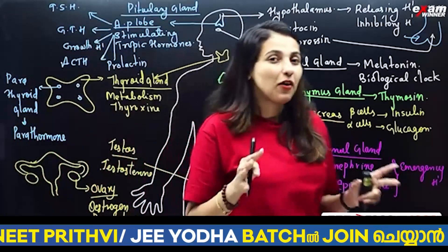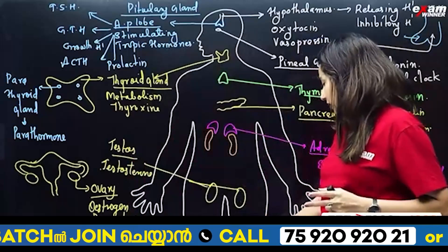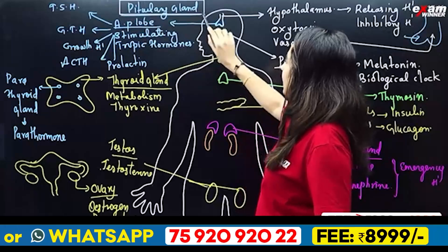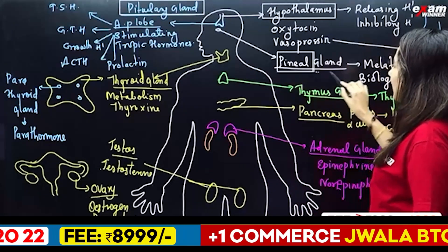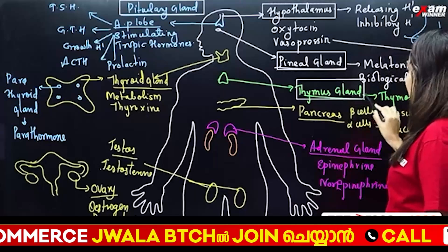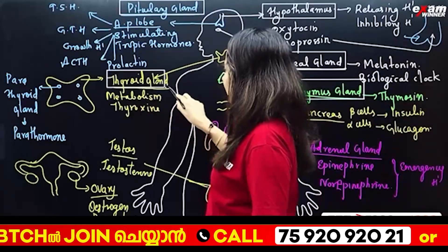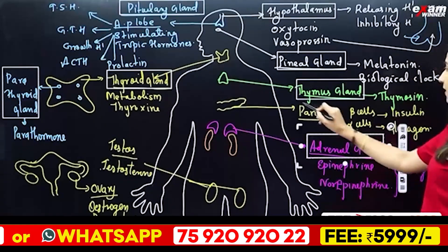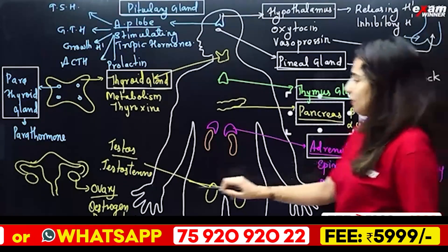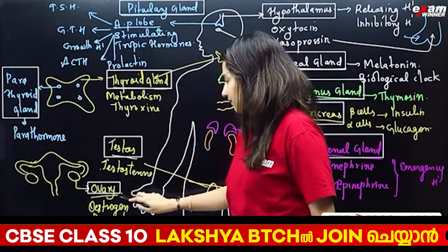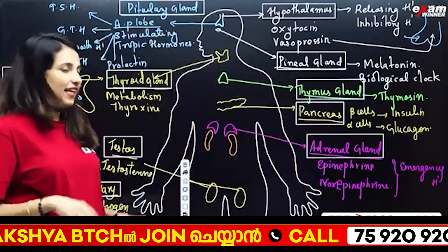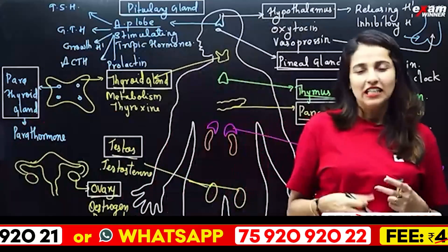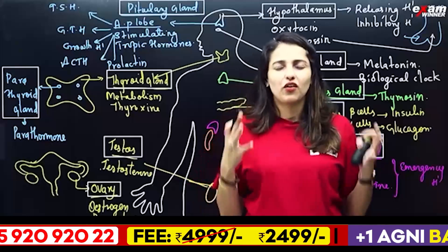To summarize, we have these endocrine glands: pituitary gland, hypothalamus, pineal gland, thymus gland, thyroid gland, parathyroid gland, adrenal gland, pancreas, testes, and ovaries. These glands secrete hormones that control most of the activities in our body.